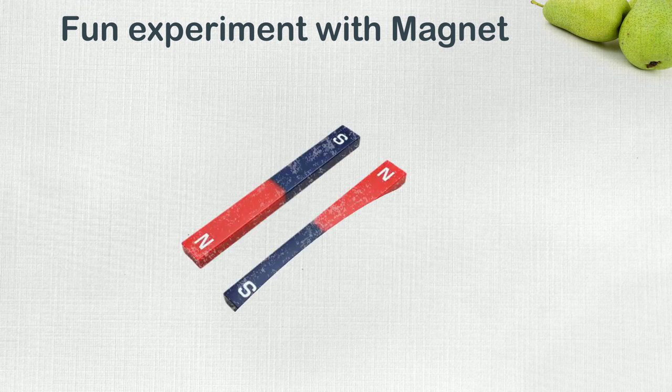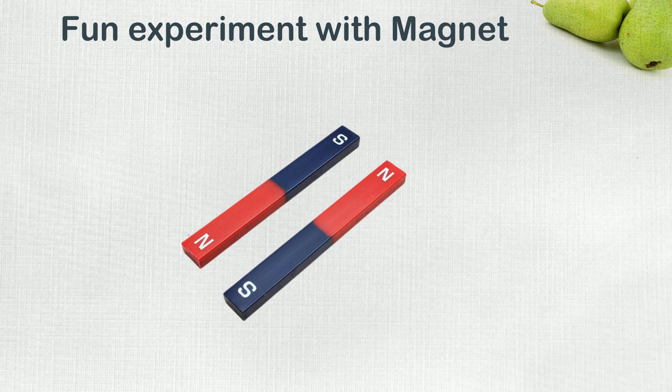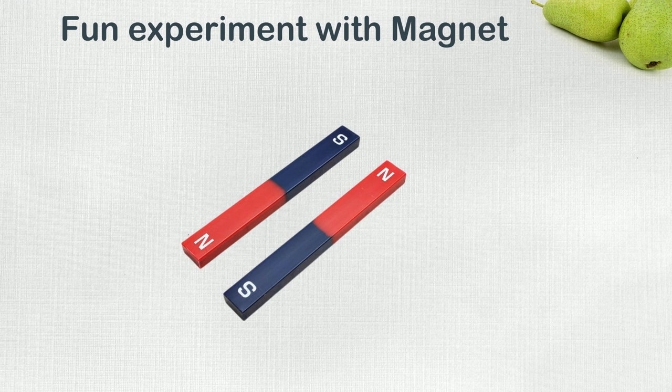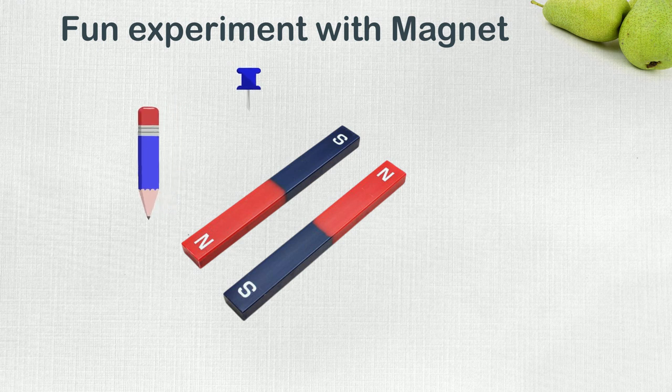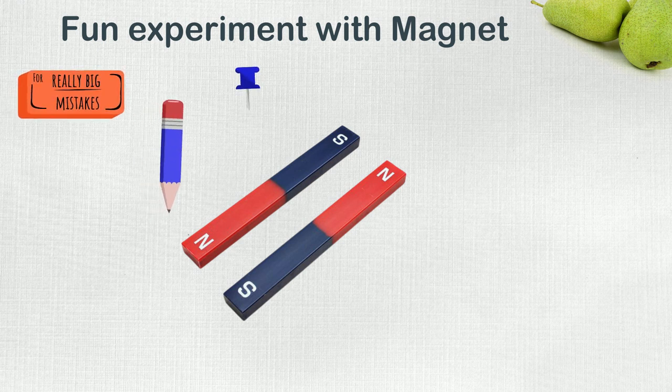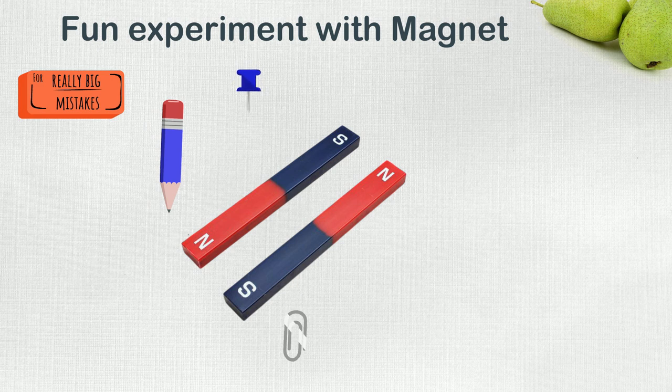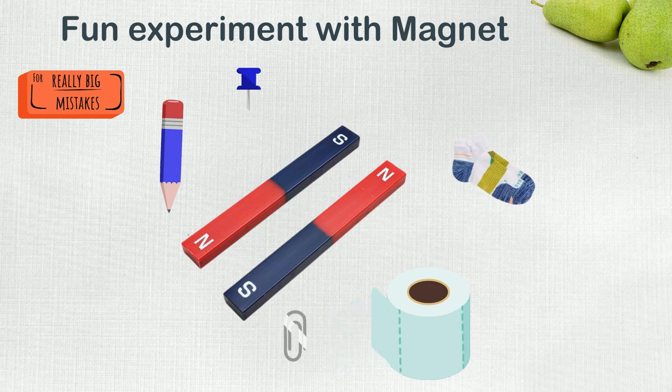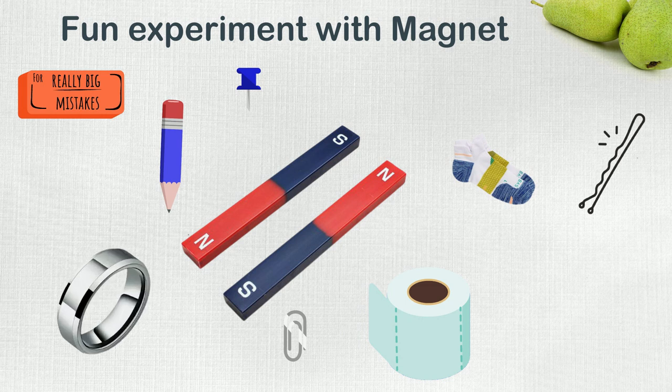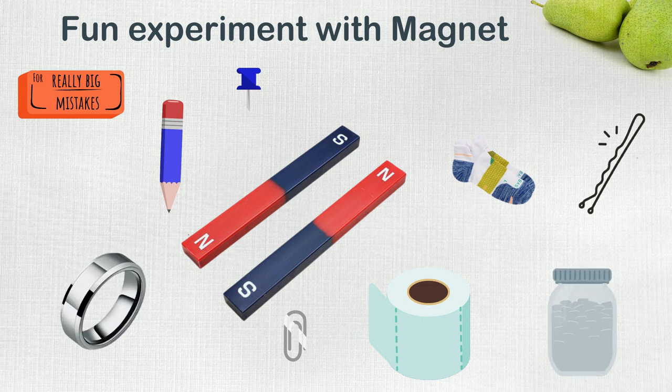Let's do a fun experiment with magnet. Let's take a bar magnet and put some different items on a table such as a nail, a pencil, an eraser, a paper clip, a tissue paper, a sock, a hairpin, a steel ring, and a glass jar.